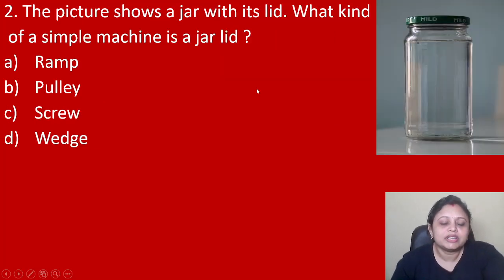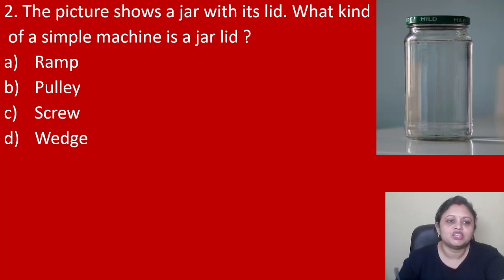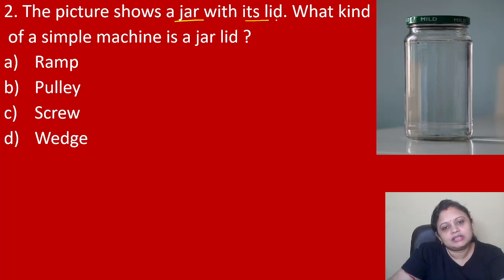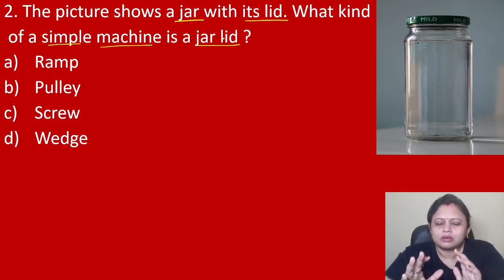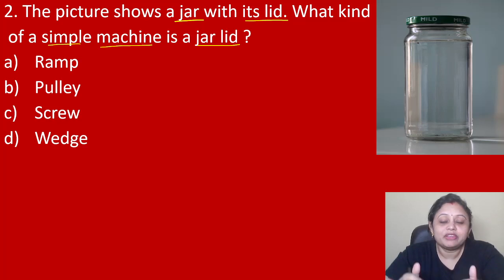Coming to the next question: the picture shows a jar with its lid. What kind of simple machine is a jar lid? Option A ramp, B pulley, C screw, D wedge. What kind of simple machine do you think? If you know the answer, you can write in the comment section.